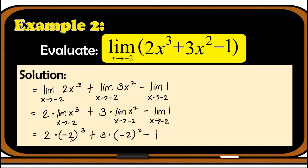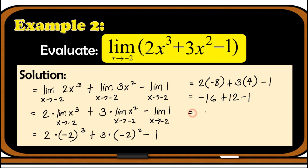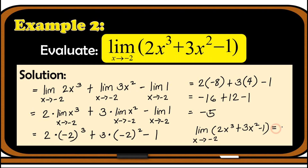Simplifying: the cube of negative 2 is negative 8, so we have 2 times negative 8 plus 3 times positive 4 minus 1. That gives us negative 16 plus 12 minus 1, which equals negative 5. So we can conclude that the limit of 2x cubed plus 3x squared minus 1 as x approaches negative 2 is equal to negative 5.